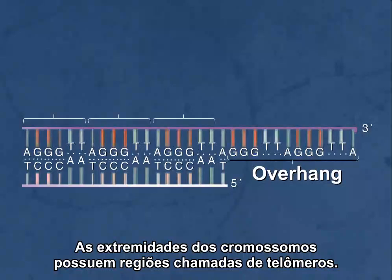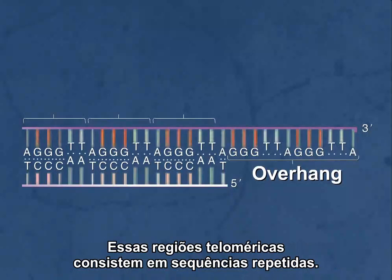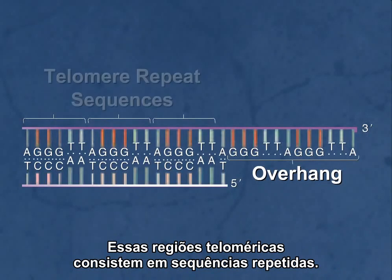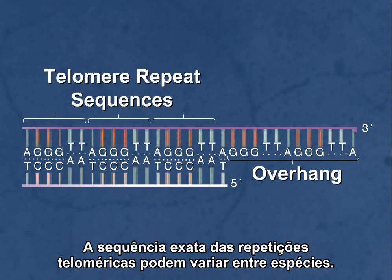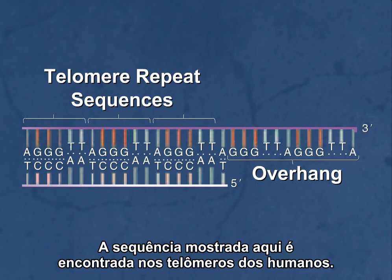The ends of chromosomes contain regions referred to as telomeres. These telomeric regions consist of telomeric repeat sequences. The exact sequence of the telomeric repeat can vary from species to species. The repeat sequence shown here is found in the telomeres of human chromosomes.